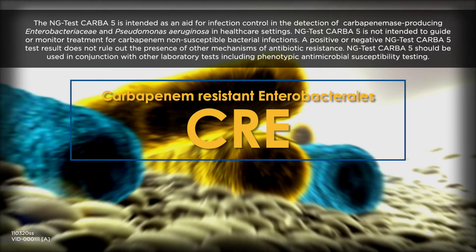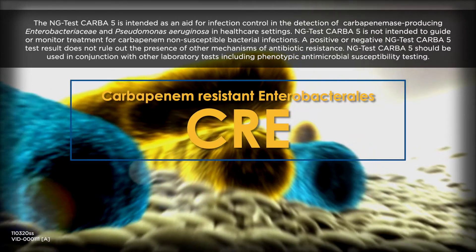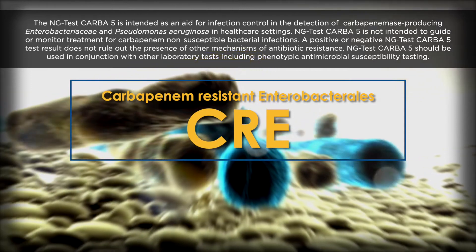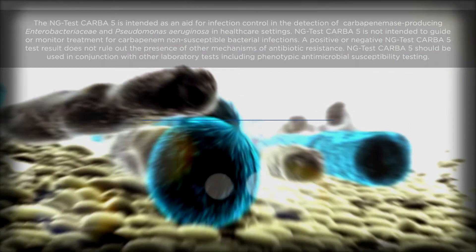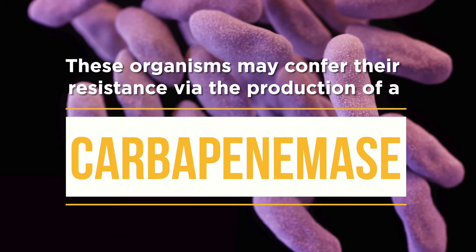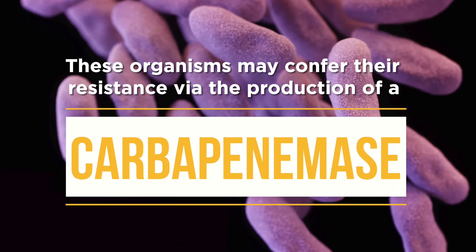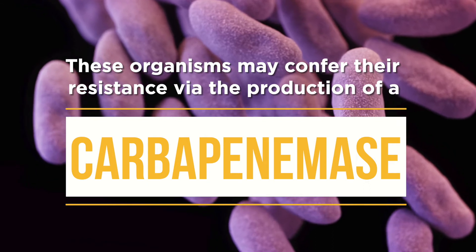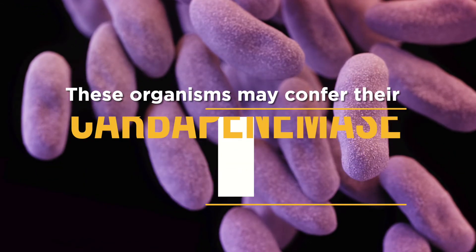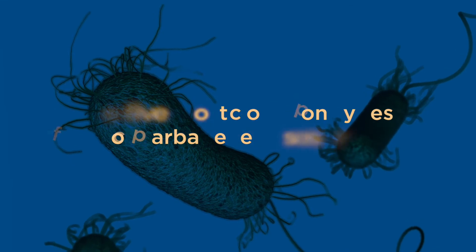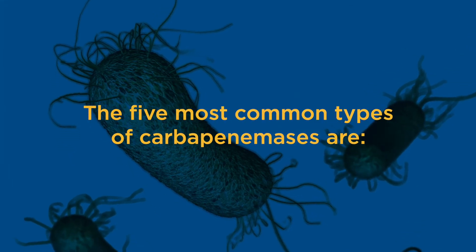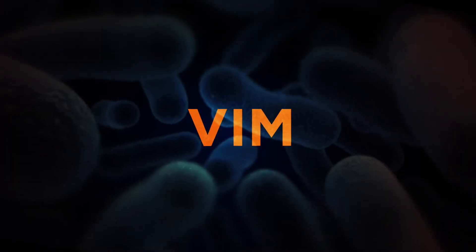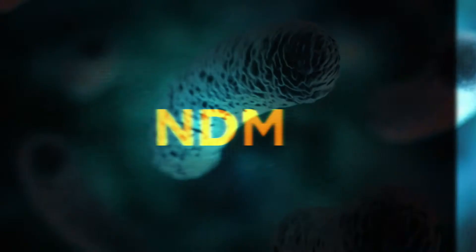Carbapenem-resistant Enterobacteriales, or CRE, are resistant to last-line antibiotics and are very challenging to treat. These organisms may confer their resistance via the production of a carbapenemase, an enzyme that inactivates carbapenem antibiotics. The five most common types of carbapenemases are KPC, OXA-48-like, VIM, IMP, and NDM.